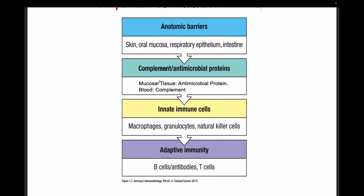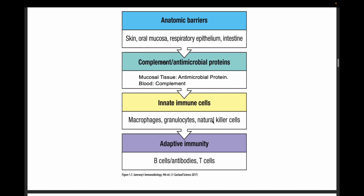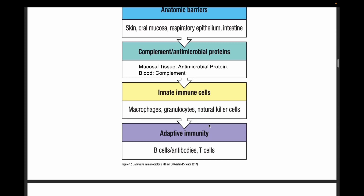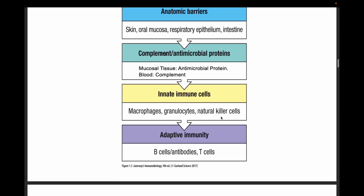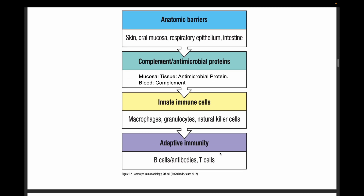We have immune cells, which include the macrophages and the granulocytes. The granulocytes include basophils, neutrophils, and eosinophils, as well as natural killer cells. The lymphocytes are not specific but attack virus-affected cells and cancer cells. And finally, the adaptive immunity includes B cells, antibodies, T cells, CD4, and CD8. This represents the stages and sequence.